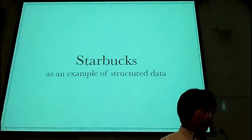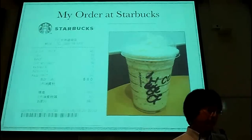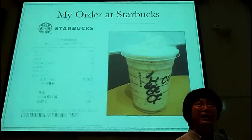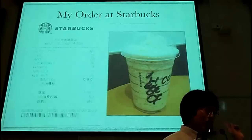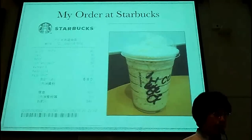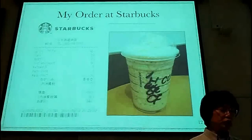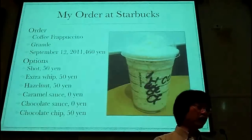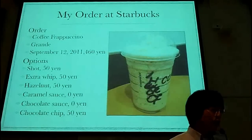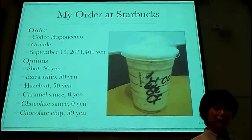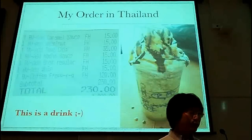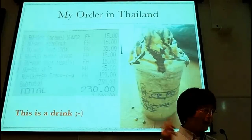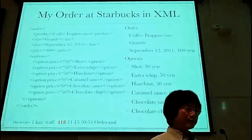Let's turn to Starbucks as an example of structural data. I love Starbucks very much, but I'm surprised there are no Starbucks in Canberra. So anyway, this is a picture I took at a Starbucks near my home — here is a receipt written in Japanese. I ordered a grande coffee frappuccino with shot, with hazelnut, caramel sauce, chocolate sauce, and chocolate chip. It's wonderful. I had the same order in Thailand last month. I enjoyed this drink. So I can write it in XML.